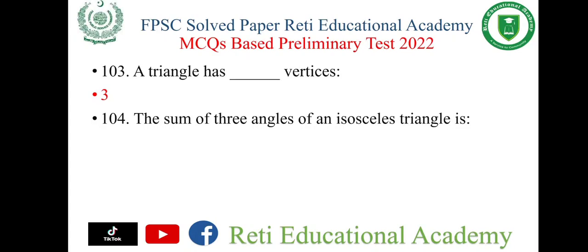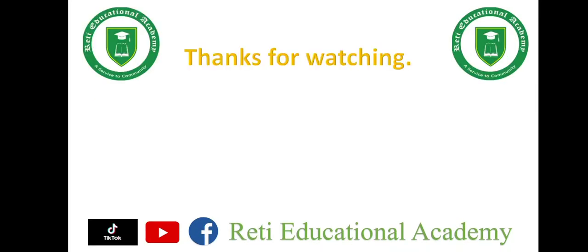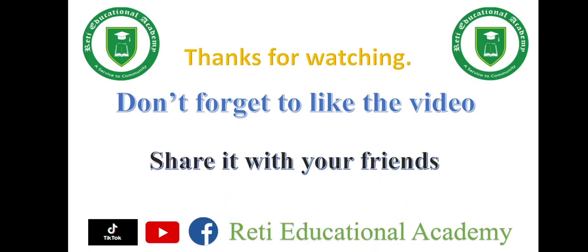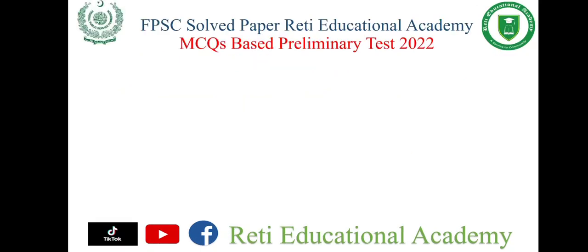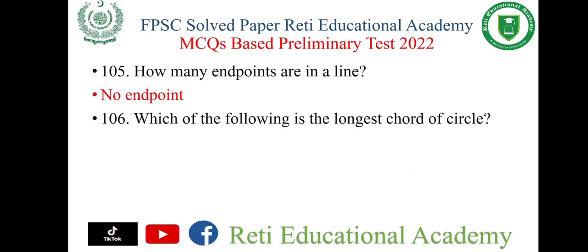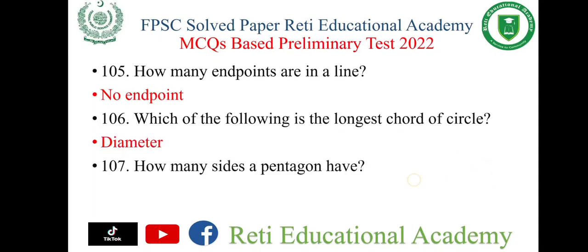Question number 104: The sum of three angles of an isosceles triangle is 360. Question number 105: How many endpoints are in a line? The right option is no endpoint. Question number 106: Which of the following is the longest chord of a circle? The right option is diameter. Question number 107: How many sides does a pentagon have? The right option is 5.